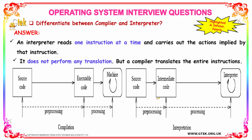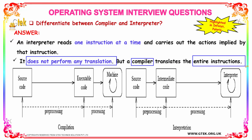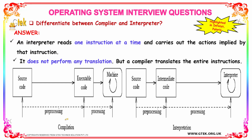Differentiate between a compiler and an interpreter. An interpreter reads one instruction at a time and carries out the actions implied by that instruction. It does not perform any translation. A compiler, on the other hand, translates the entire set of instructions. Compilation takes a little more time, whereas an interpreter takes even more time per execution.